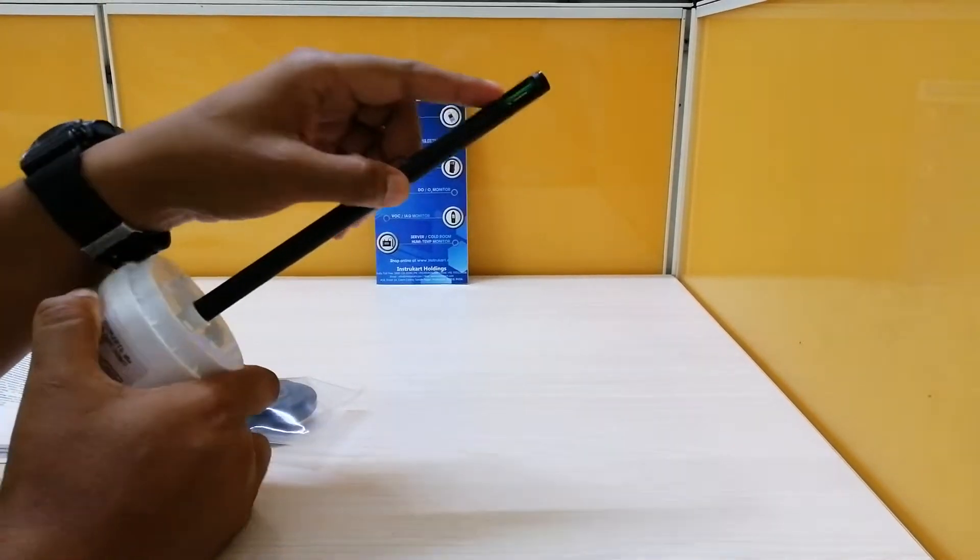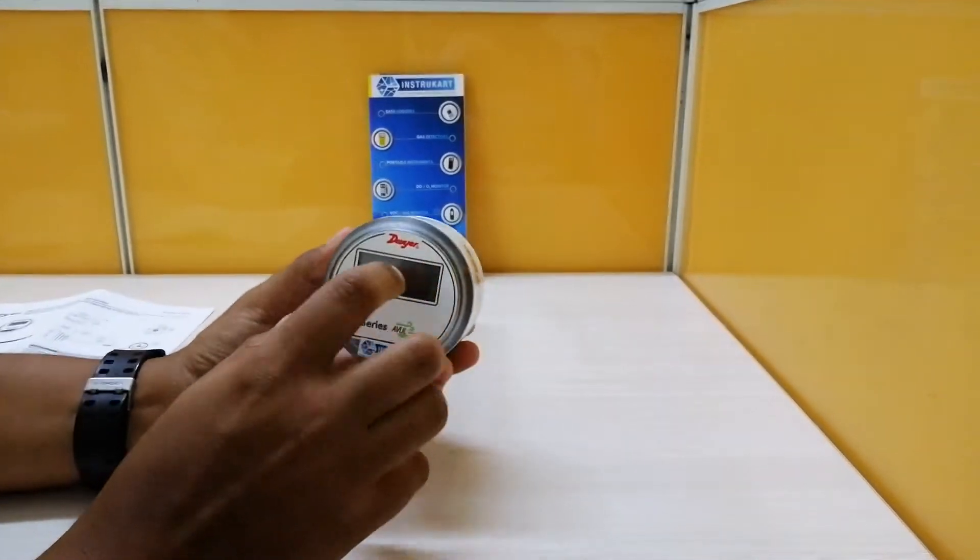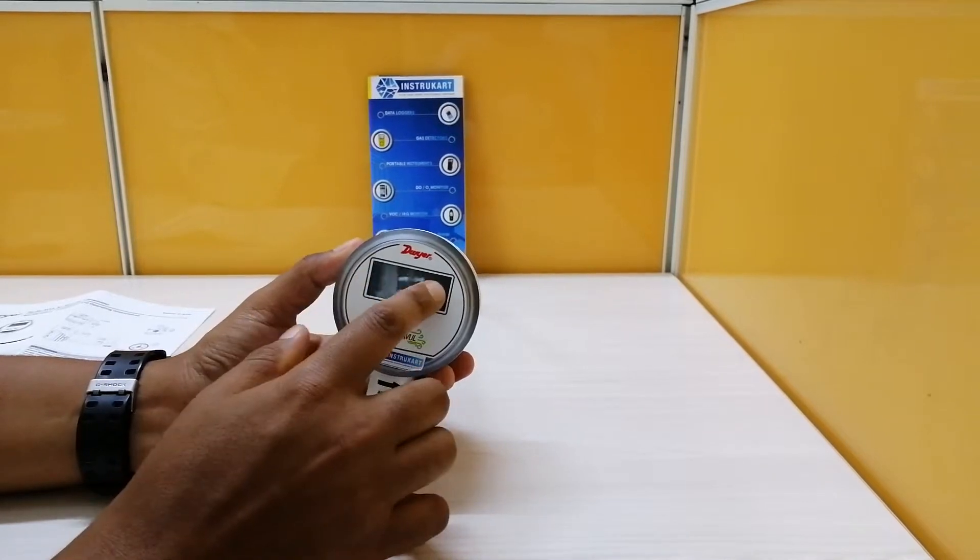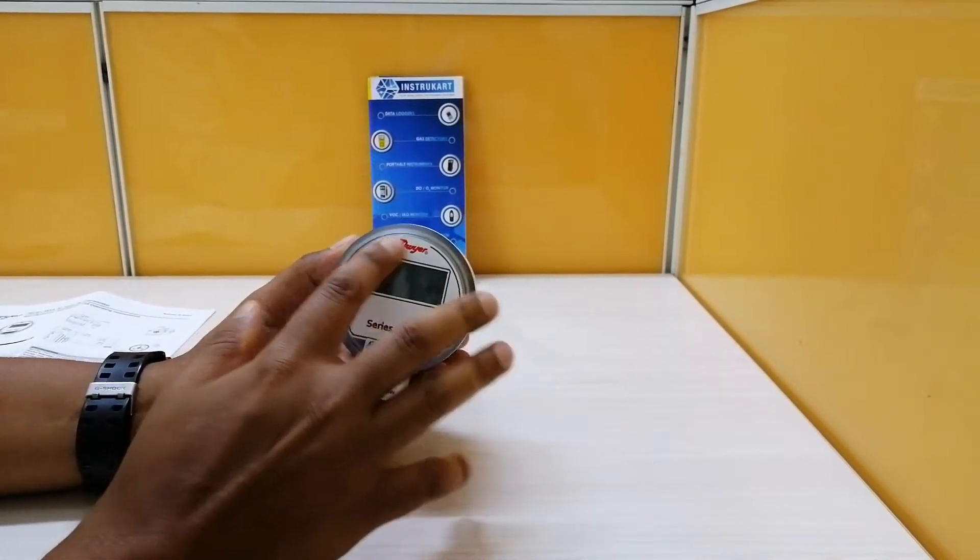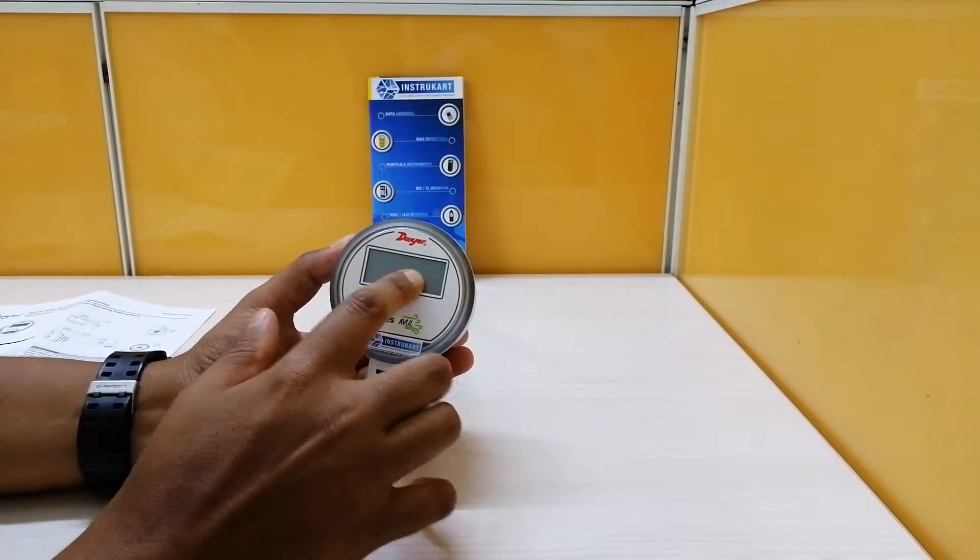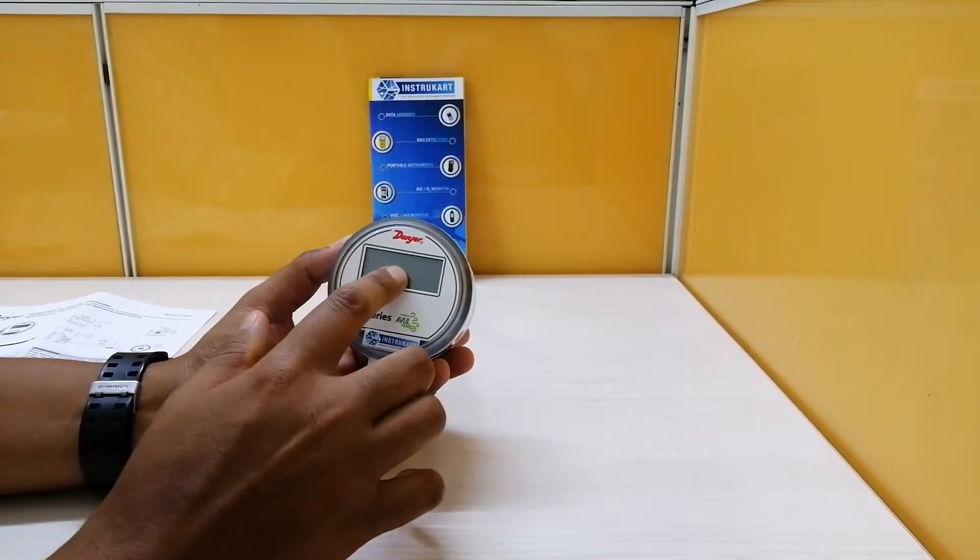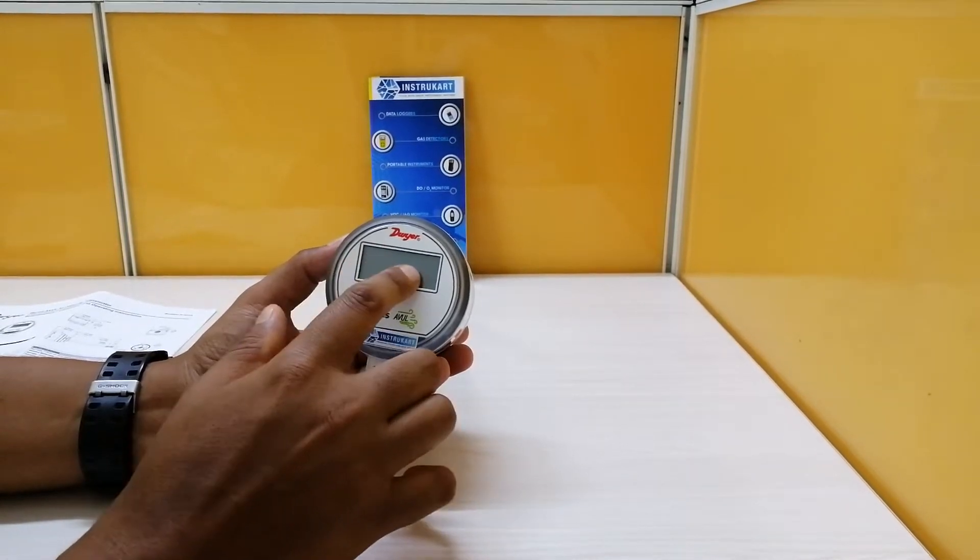This is the air velocity sensor and you can insert that into the duct. It has a local display should you require to see over the duct. It has a 5 digit LCD backlit display and it will also show in FPM.